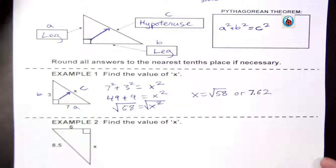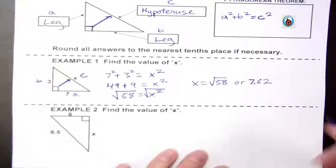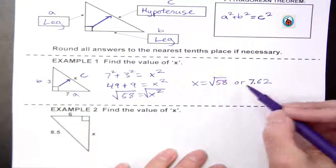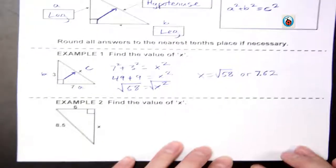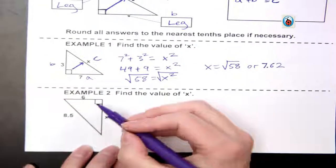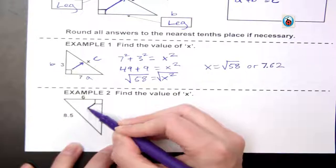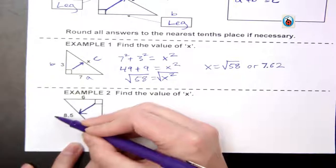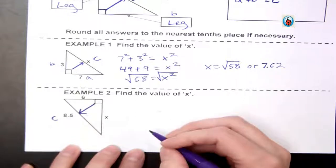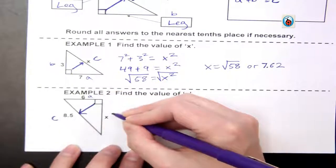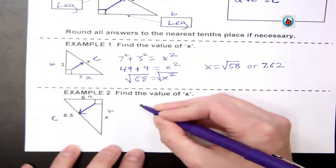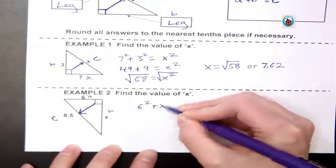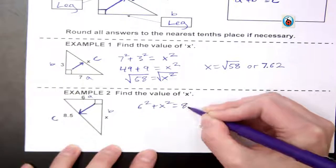Depending what your directions say, sometimes you'll leave it in the square root format, sometimes you'll put it into the decimal answer. On this next one, first we label our hypotenuse—that's always the first step. This time, 8.5 is our c, 6 and x are my a and b. So I have 6 squared plus x squared equals 8.5 squared.